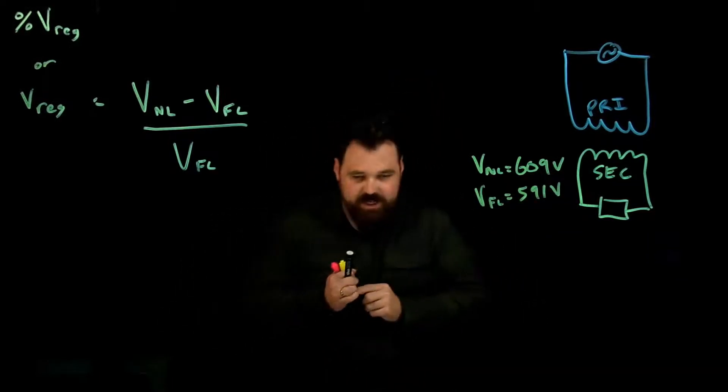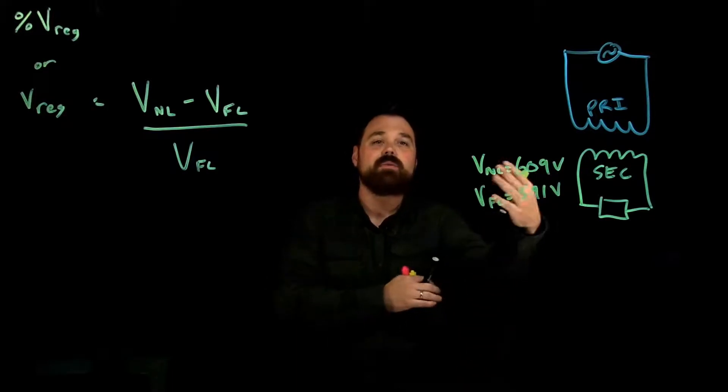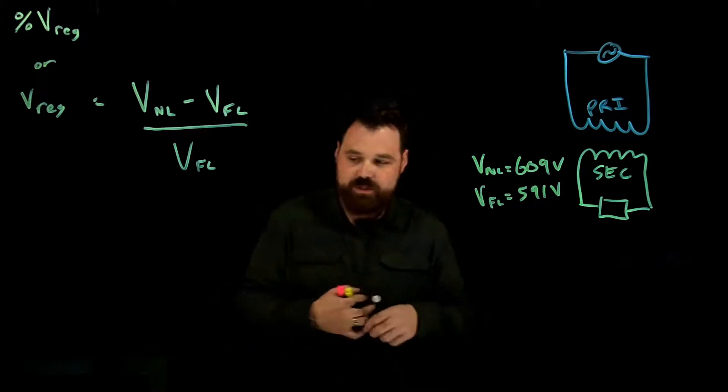So when we energize the transformer, initially measure the voltage without a load, we read 609. Once we add a full load, we get 591 volts.